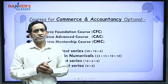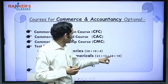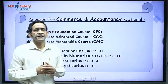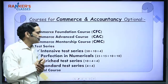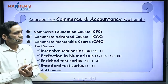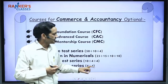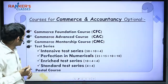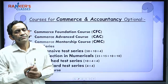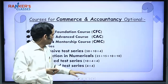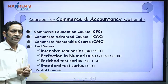We have four kinds of test series. The Intensive Test Series has 64 tests total — 50 chapter tests, 10 subject tests, and 4 comprehensive tests. There is also the Perfection in Numerical Test Series for Paper 1 only, with around 60 chapter tests: 25 in FM, 15 in Cost Accounting, 10 in Financial Accounting, and 10 in Income Tax. The Enriched Test Series generally starts in December and June with 18 tests — 10 subject tests, 4 sectional tests, and 4 comprehensive tests.